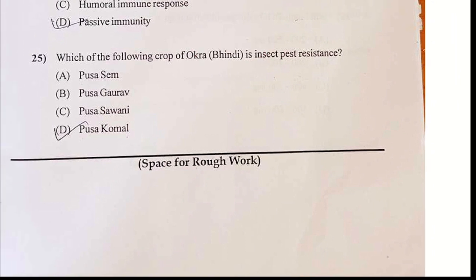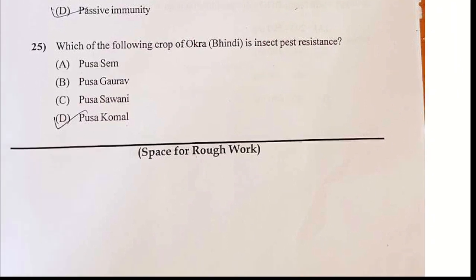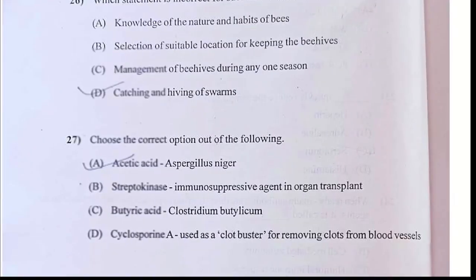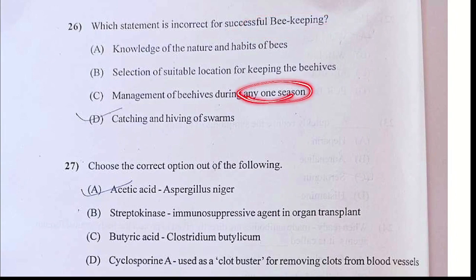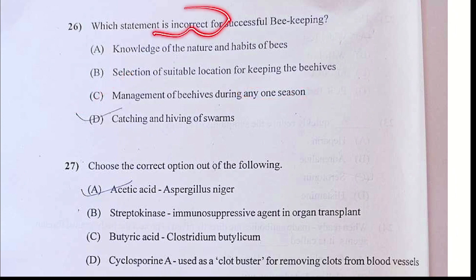Okra-bhindi is related to Pusa Sawani and Pusa A4. Now look at question 26 — successful beekeeping in any one season. Your answer should be C. It is relatively incorrect — any one season.